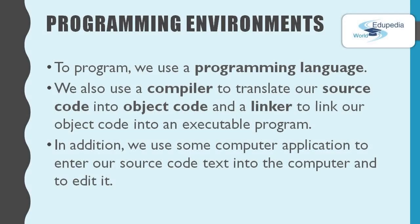To program we use a programming language. We also use a compiler to translate our source code into object code and a linker to link our object code into an executable program. We talked about this in the previous episode. In addition to that, we use a computer application to enter our source code text into the computer and to edit it. These are the first and most crucial tools that constitute our programmer's toolset or program development environment.